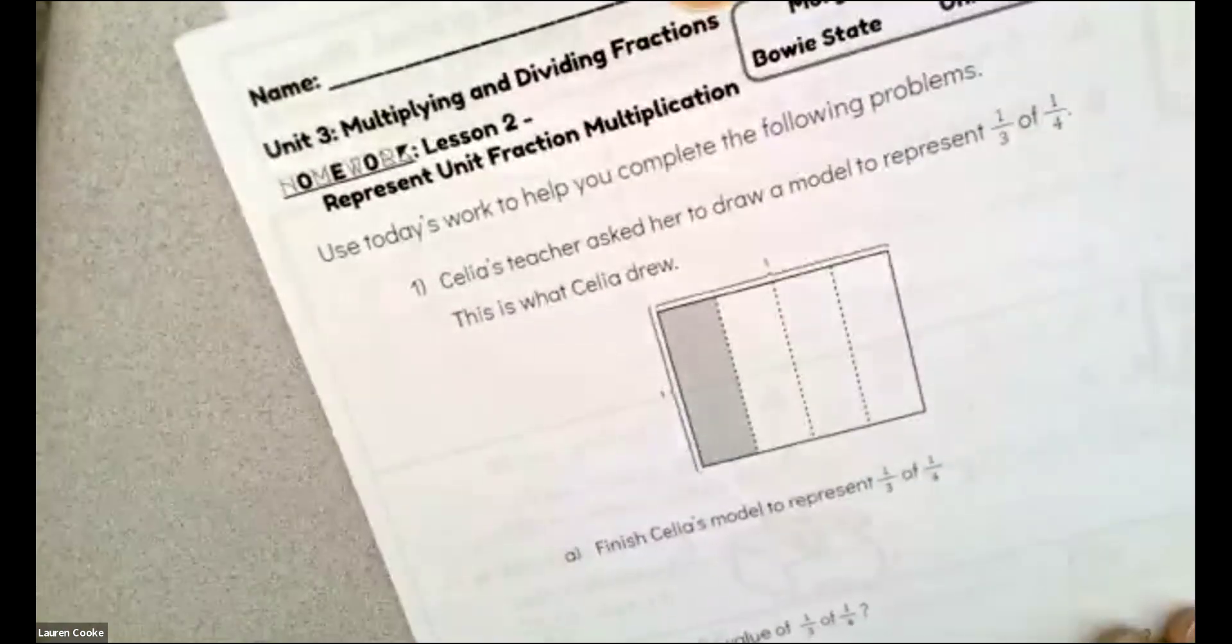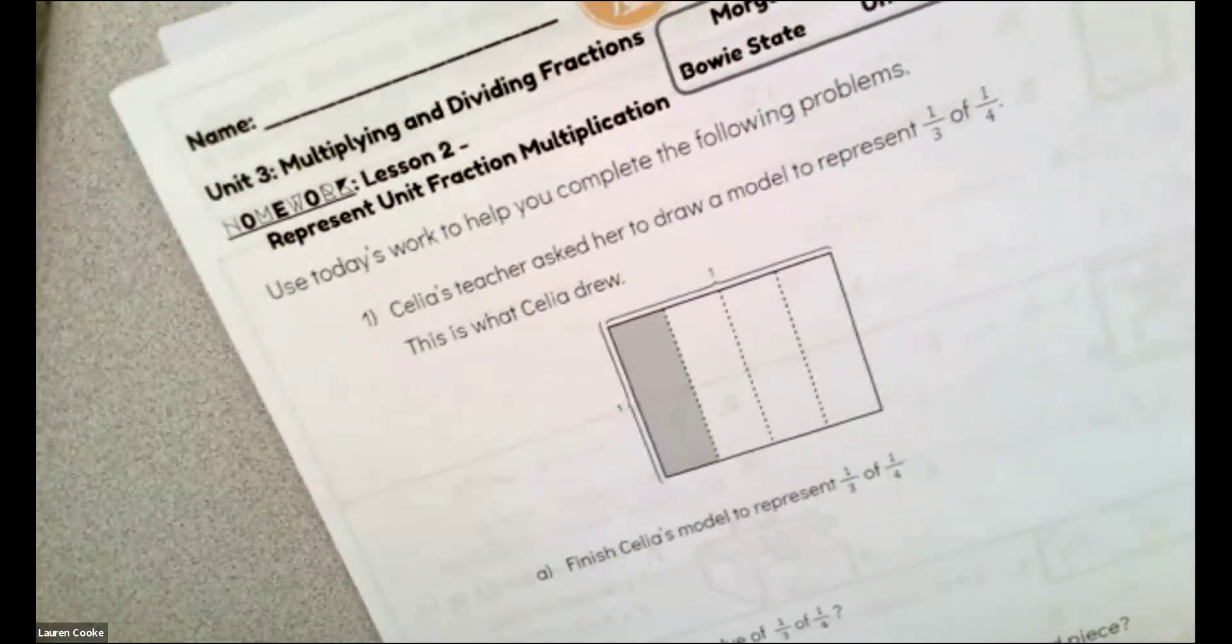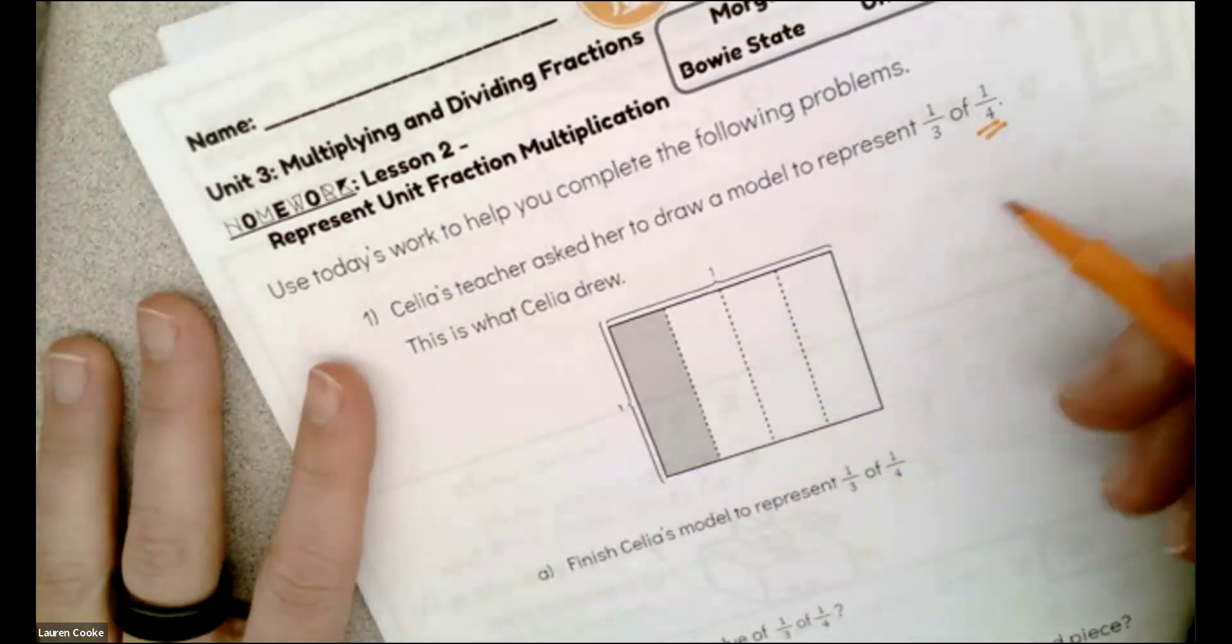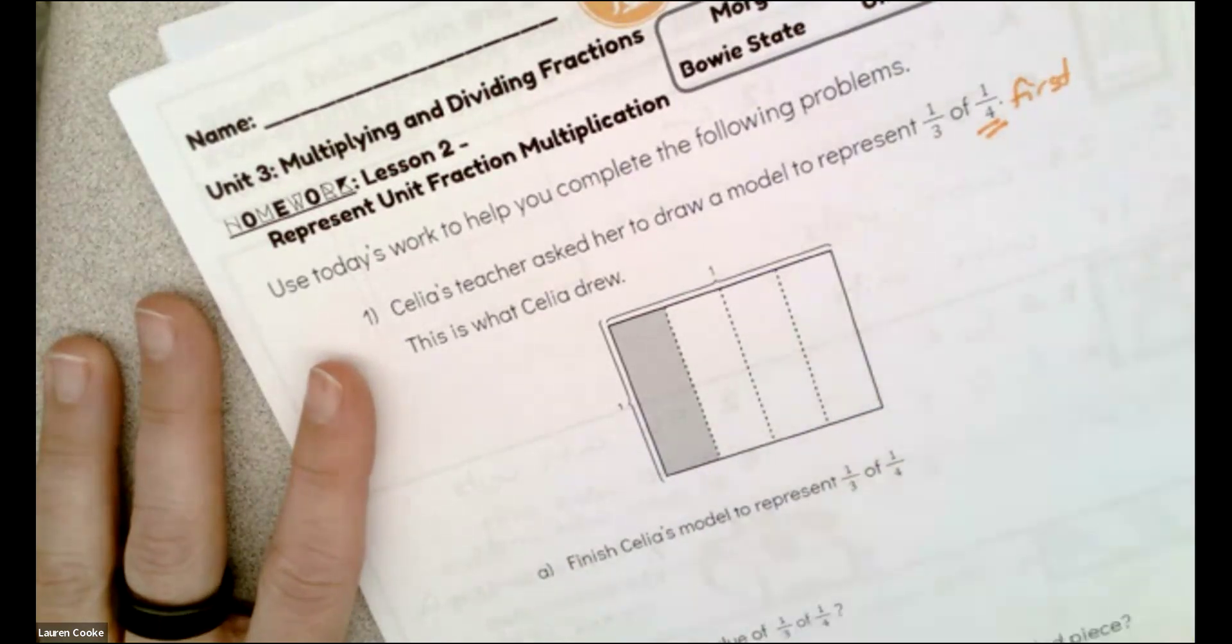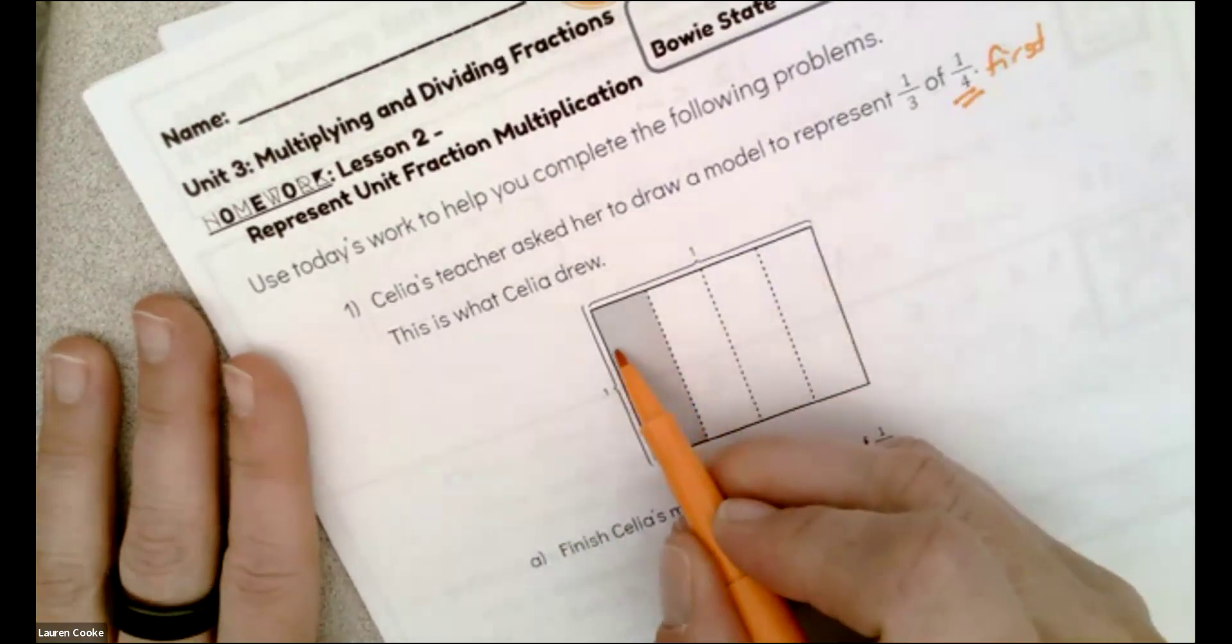Okay, now hopefully that's becoming more clear for you. Let's get started. Celia's teacher asked her to draw a model to represent one-third of one-fourth. This is what she drew. So good job, Celia. She drew the one-fourth first, love that. And then they're asking us to finish it.